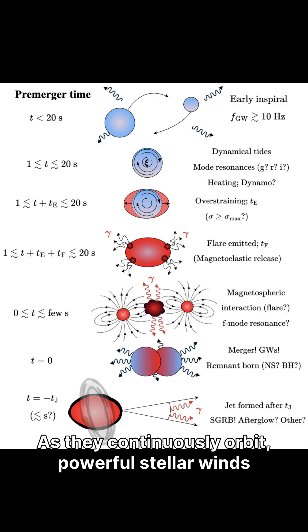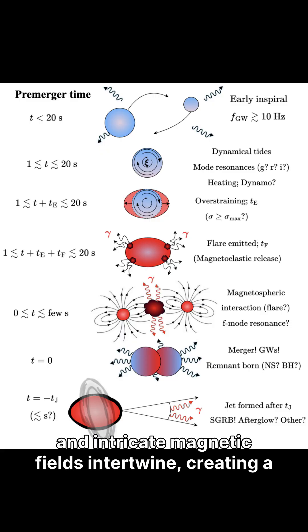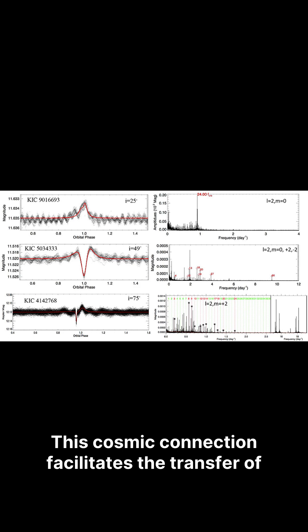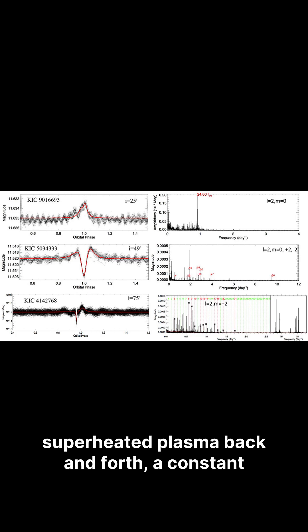As they continuously orbit, powerful stellar winds and intricate magnetic fields intertwine, creating a dynamic bridge between them. This cosmic connection facilitates the transfer of superheated plasma back and forth, a constant exchange of stellar material.